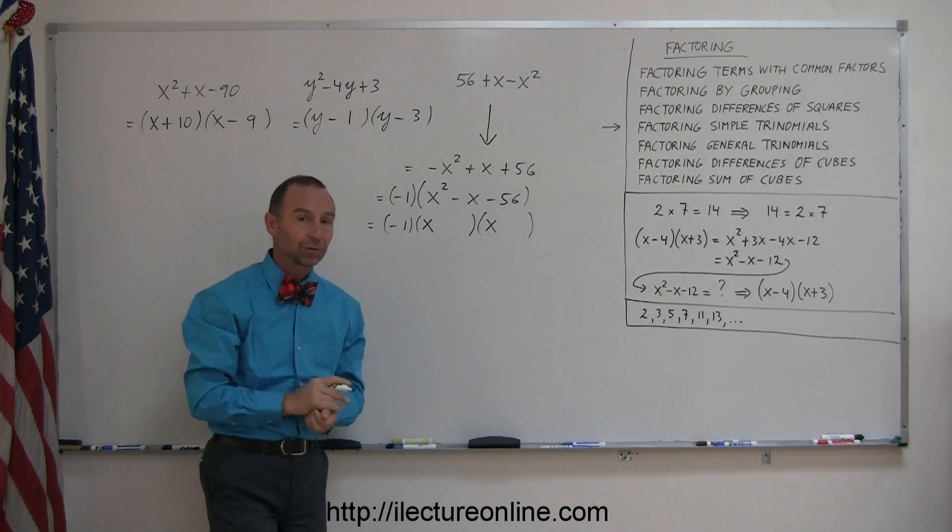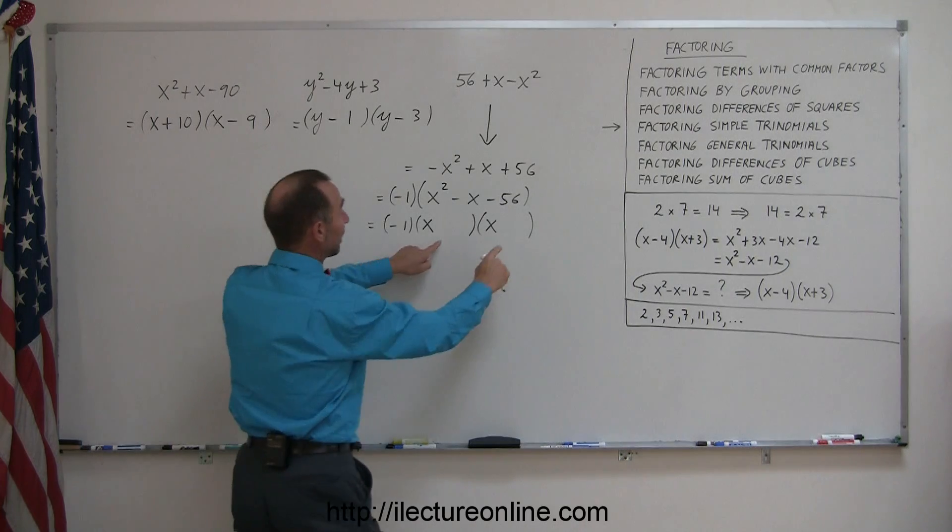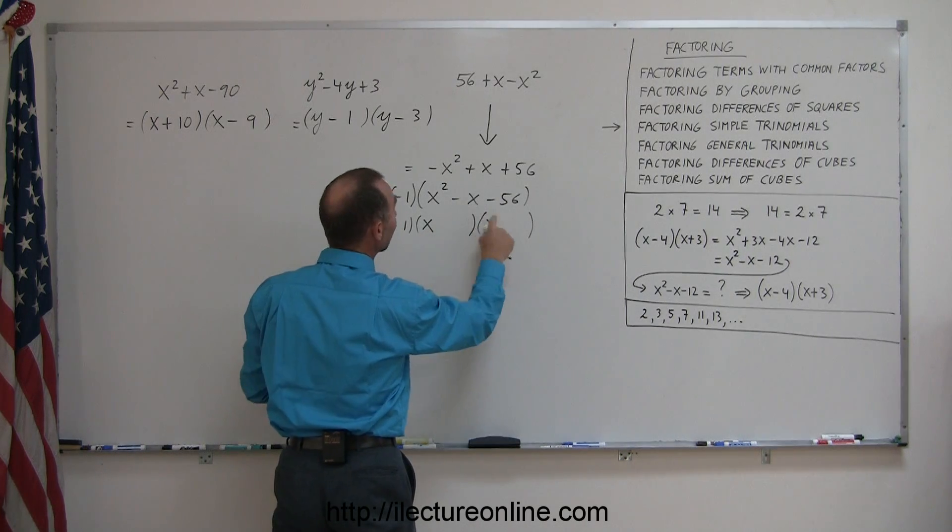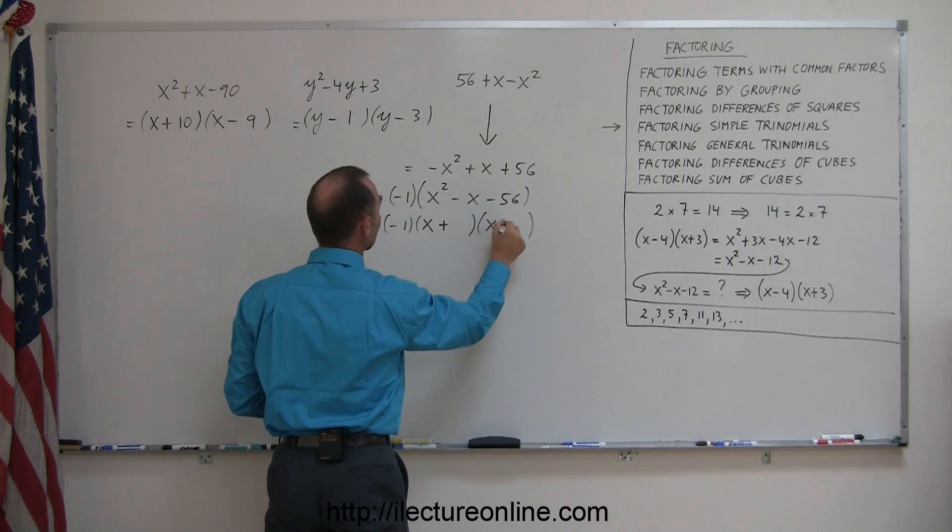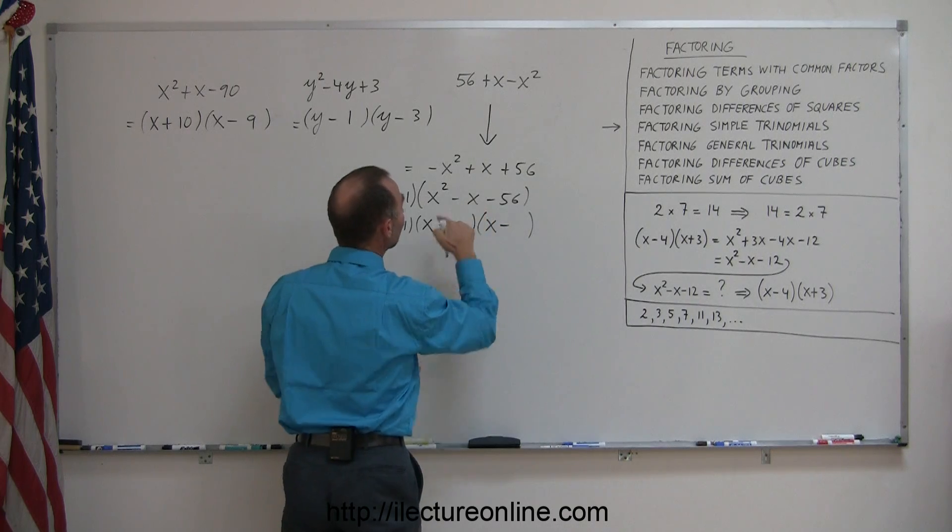The sign there is negative. The only way to get a negative when you multiply these two together is to have a positive and a negative sign here. And then of course, when you add them, you get a negative 1.